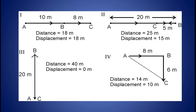So here distance and displacement are same. For figure 2, distance equals AB plus BC which is equal to 20 plus 5, that is equal to 25 meters. And displacement, that is the difference between initial and final position, is AC which is equal to 20 minus 5, which is equal to 15 meters. Here distance and displacement are not same. Again, distance equals AB plus BC which is equal to 20 plus 20, that is equal to 40 meters. And displacement is equal to AC equal to 0 meters because it is at the same point from where the object started. So here also distance and displacement are not same.